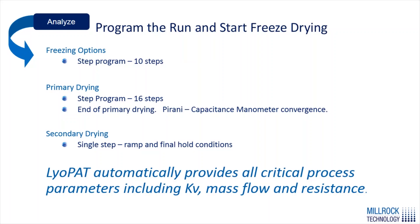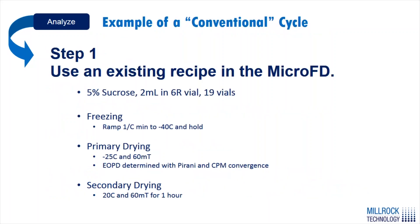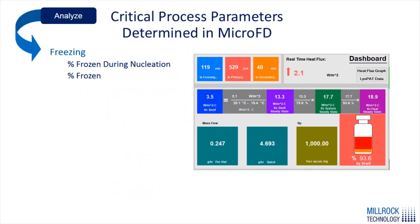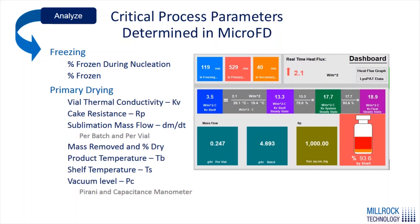To start, we ran a plain recipe-based freezing program where we just ramped to a steady temperature in freezing and primary drying. During this cycle, LiOPAT automatically calculated all critical process parameters throughout the run, including our Kv, mass flow, and cake resistance. The specific recipe used was ramping at 1°C per minute to minus 40, then drying at minus 25°C at 60 mTorr. The product was 5% sucrose, 2 milliliters in a 6R vial, with 19 vials used in the array.